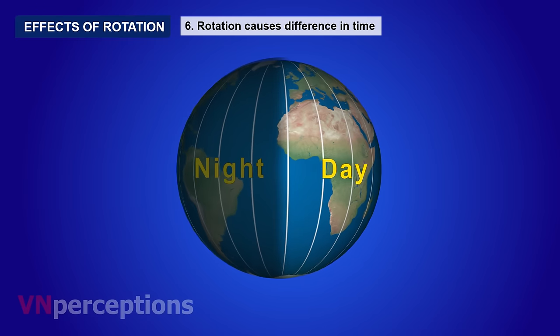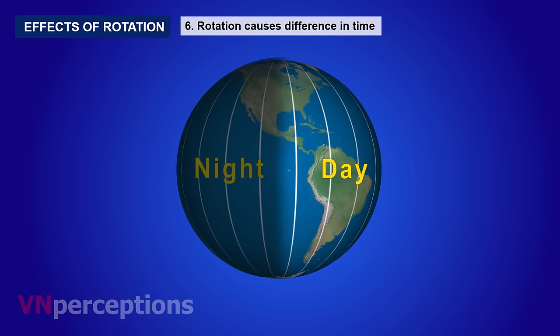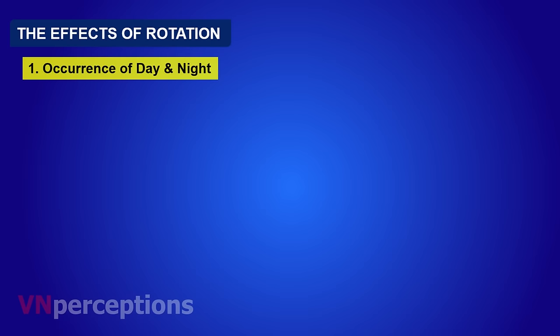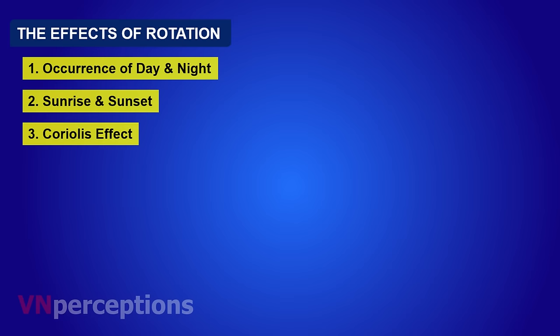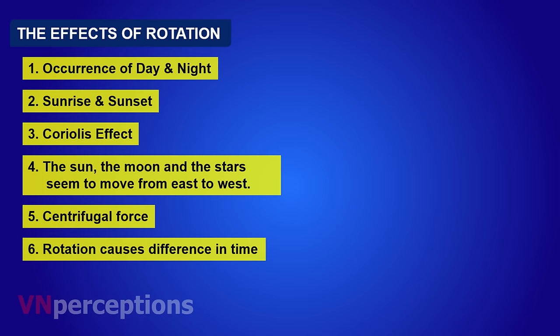The rotation and revolution also cause seasons and variation in the length of day and night, which we are soon going to learn. To summarize the effects of rotation: occurrence of day and night, sunrise and sunset, the Coriolis effect, the apparent movement of the sun, moon and stars from east to west, centrifugal force, and difference in time caused by rotation.